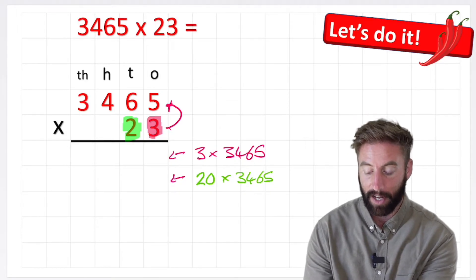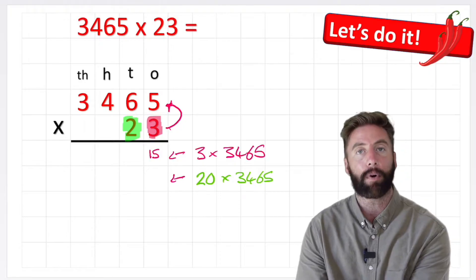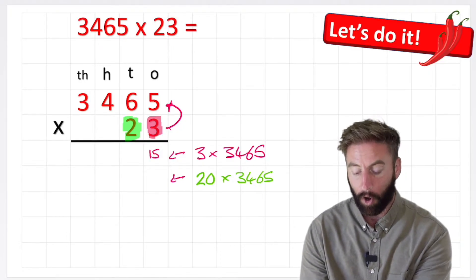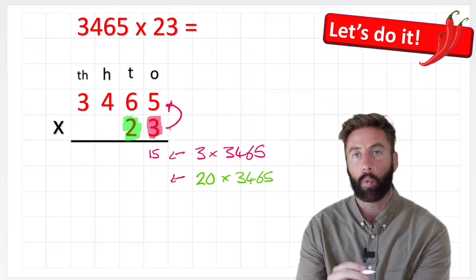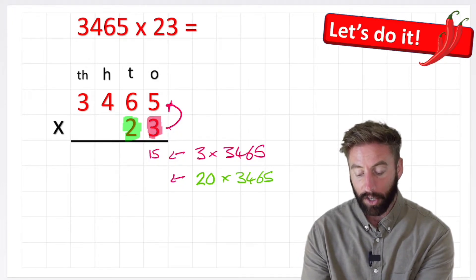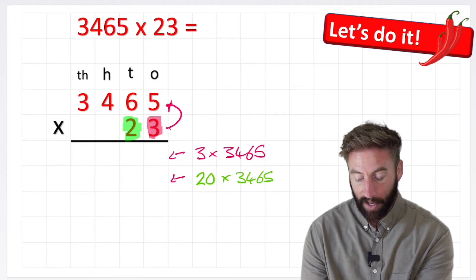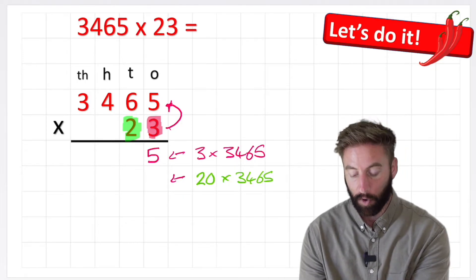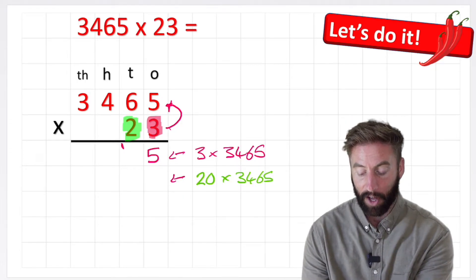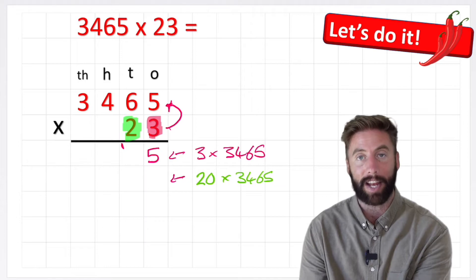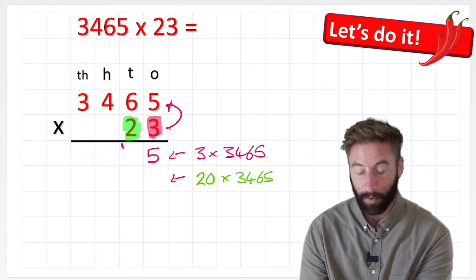3 times 5 is 15, but uh oh, I can't put 15 all in one column like that because remember, one column, one number. So what can I do? Well I can put my 5 in here because we have five ones, but then my 10, I'm going to hold a small one here ready for when I answer the tens column, which I'm going to do now.